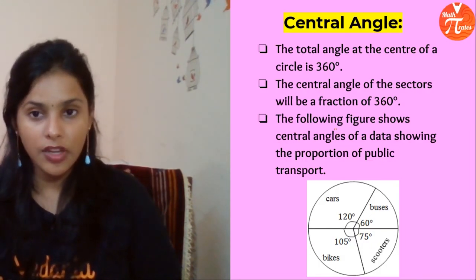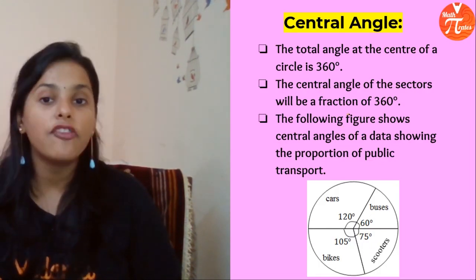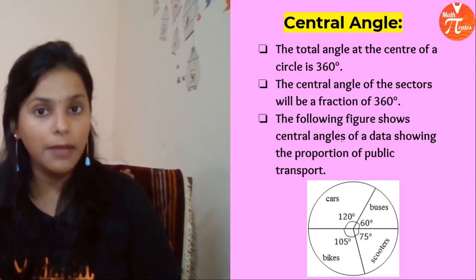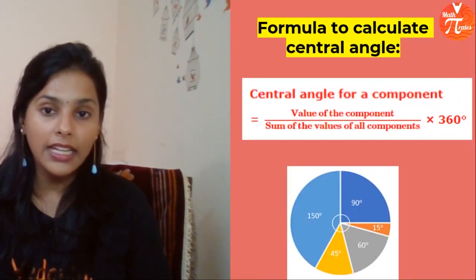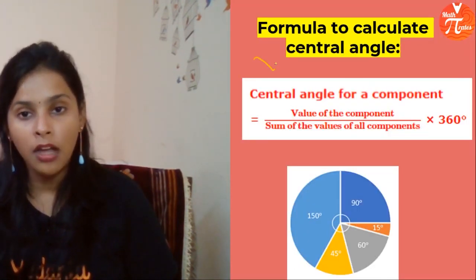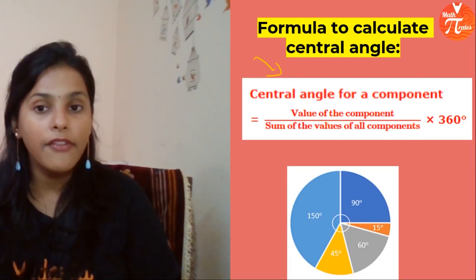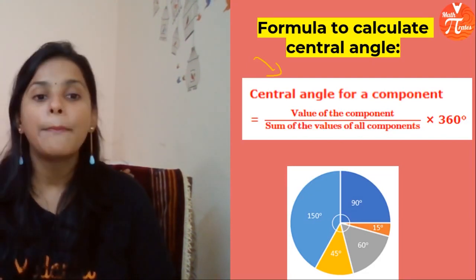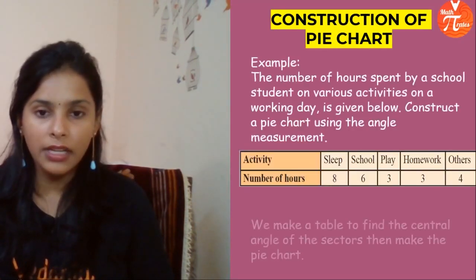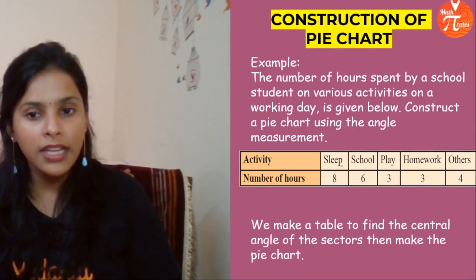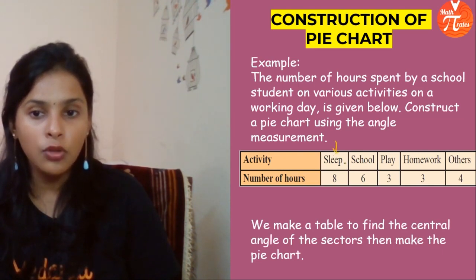What is central angle? Total angle is basically 360 degrees. The central angle means the fraction of that 360. Since we require the part of the whole, the central angle formula is: value of the component divided by sum of the values of all components, multiplied by 360. For example, these activities you have done: